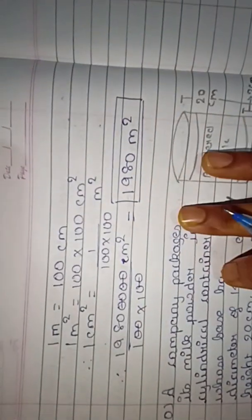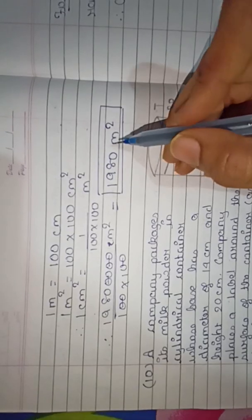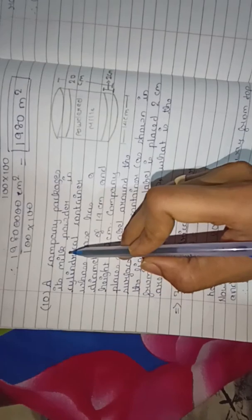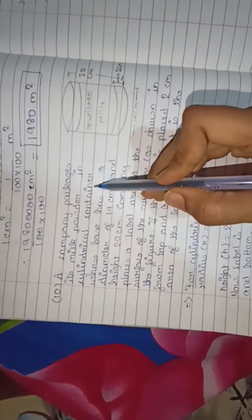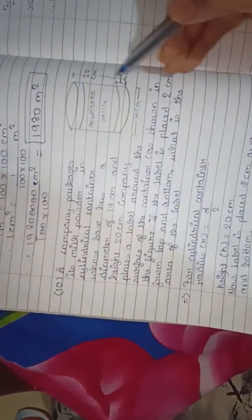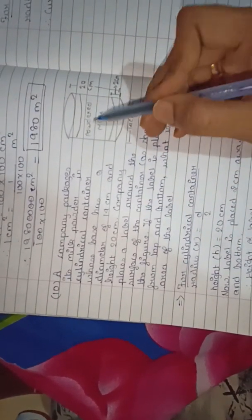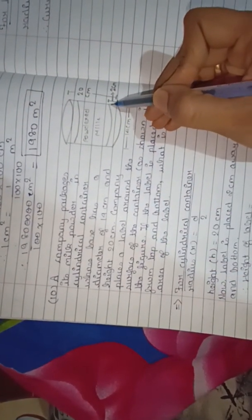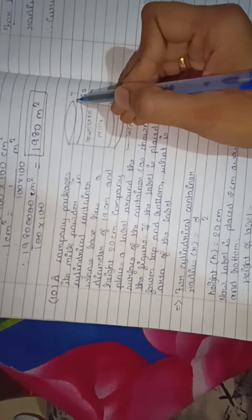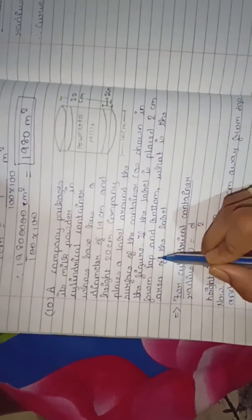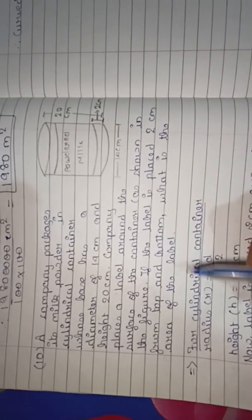So the area of the road leveled is 1980 m². Question 10. A company packages milk powder in a cylindrical container whose base diameter is 14 cm and height is 20 cm. A label is placed around the surface of the container, 2 cm above the base and 2 cm below the top.